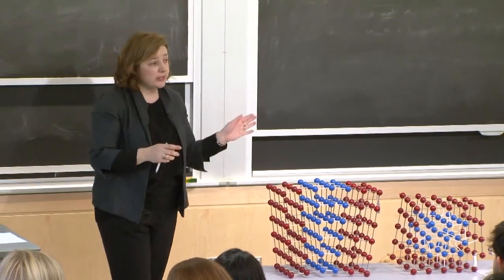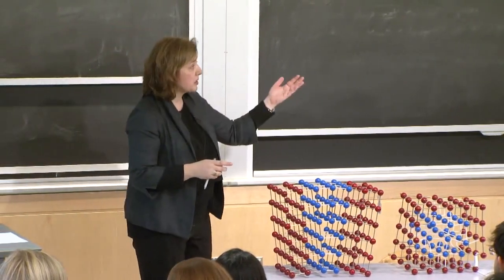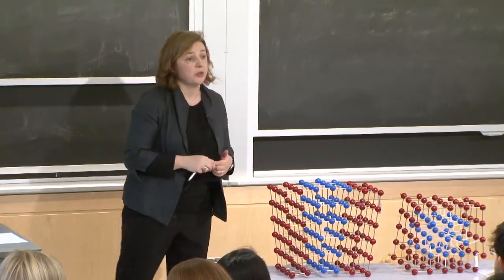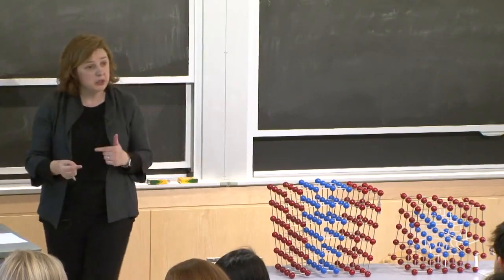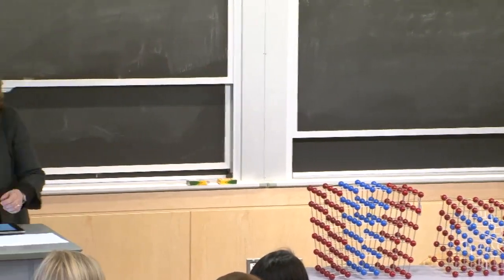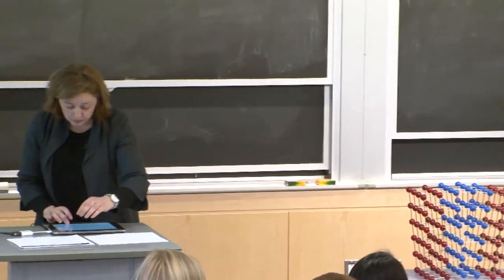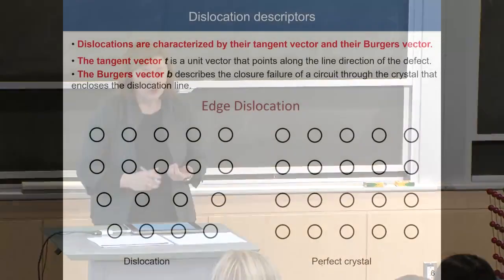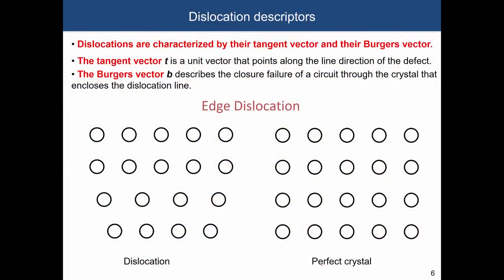The relationship between the Burgers vector b and the tangent vector t will distinguish between edge and screw dislocations. How do we define a Burgers vector? In the case of an edge dislocation, it's a slightly easier case. I will go through this and also illustrate how this works for screw dislocations.